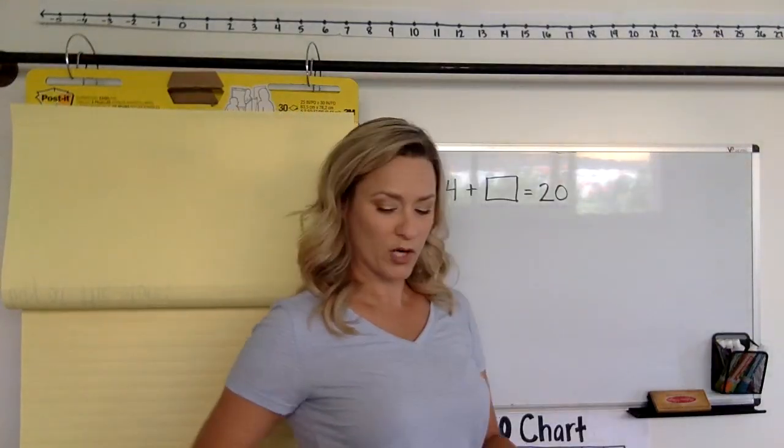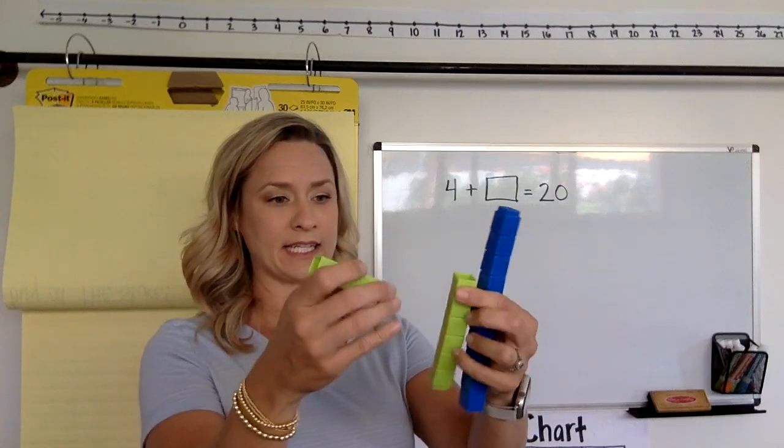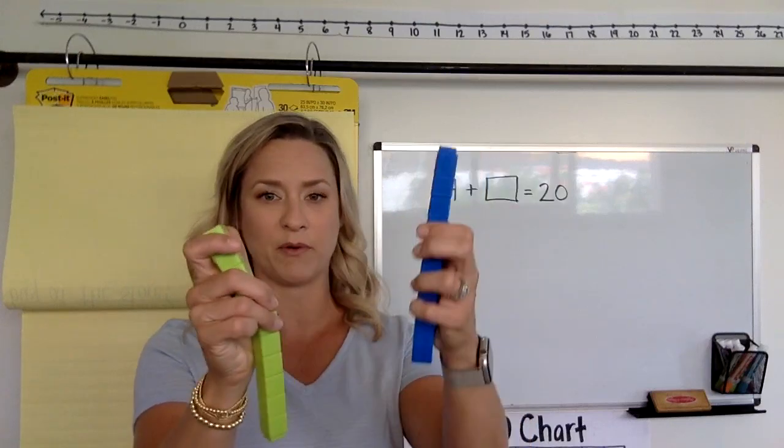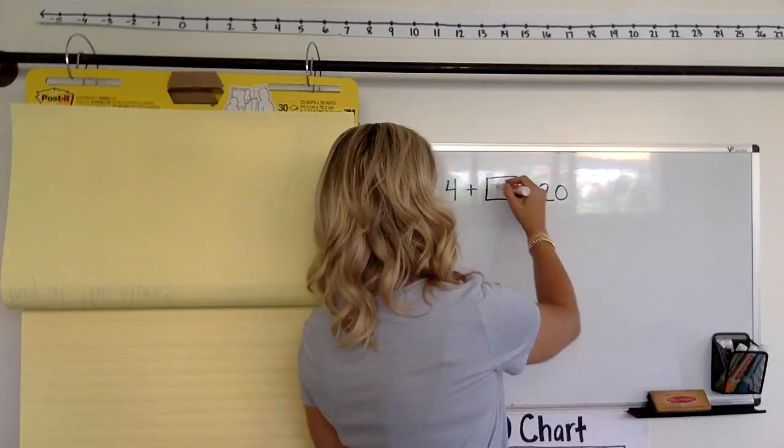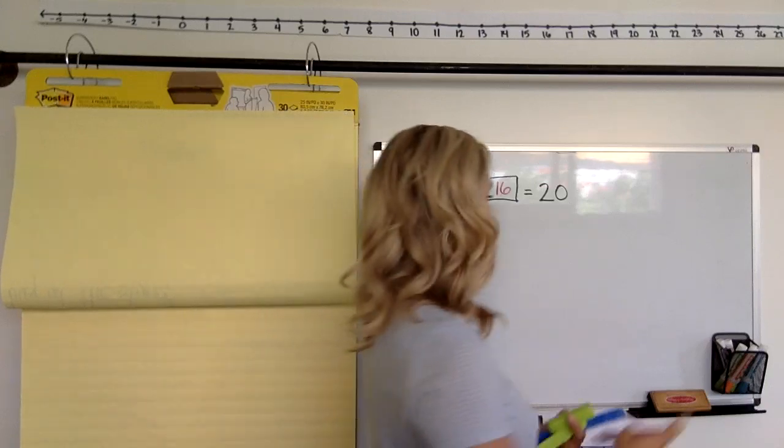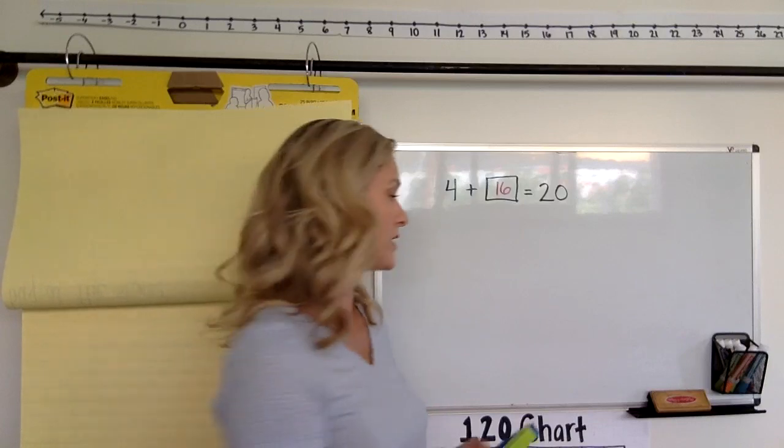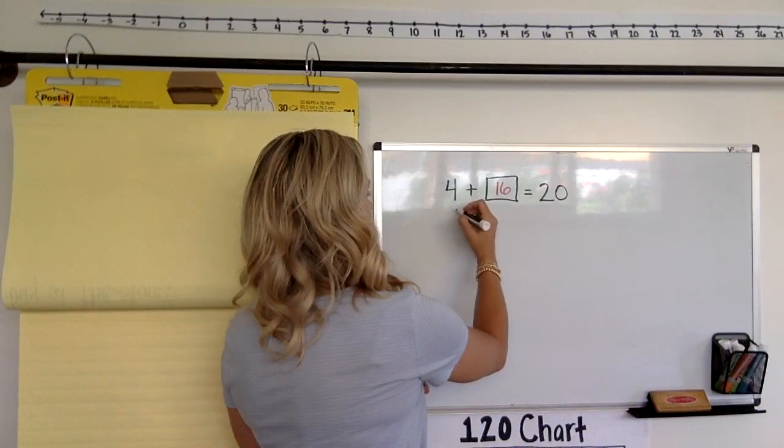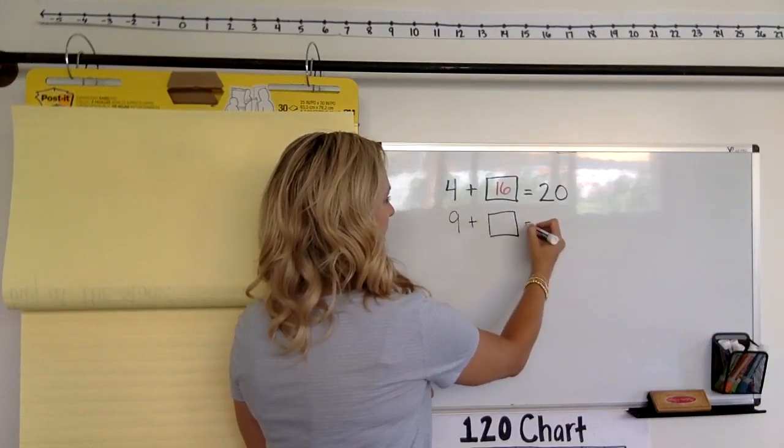A lot of them are going to think, alright, I know my 4 plus 6 makes 10, and if I had another one that would make 20. So the answer here must be 16. So they'll probably approach it like that. The next question I'm going to ask them is really getting to be pretty challenging. So it's going to be 9 plus what makes 35?